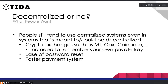One important question is: do people really want decentralization? Right now people still tend to use centralized systems, even in systems meant to be decentralized. Crypto exchanges like Mt. Gox or Coinbase exchange Bitcoin but are essentially centralized systems on top of the Bitcoin blockchain. Benefits include not having to remember your private key, being able to reset a password, and in some cases faster payments.